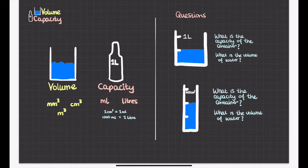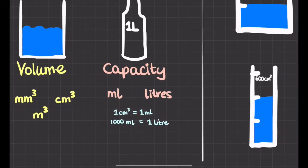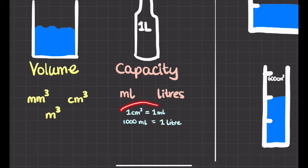But actually that's basically the same as centimeters cubed, because one centimeter cubed is exactly the same as one milliliter and a thousand milliliters make a liter. So you could also say a thousand centimeters cubed make one liter.